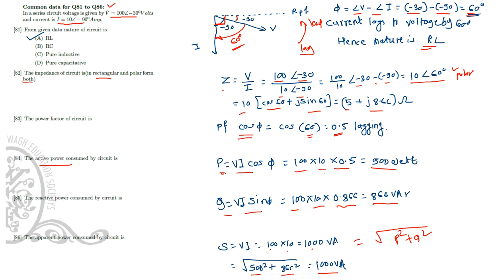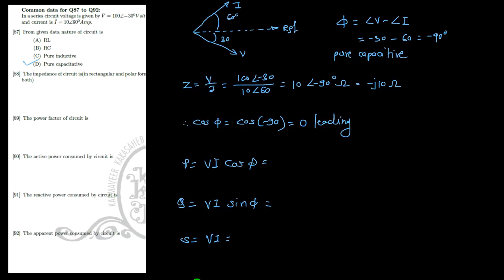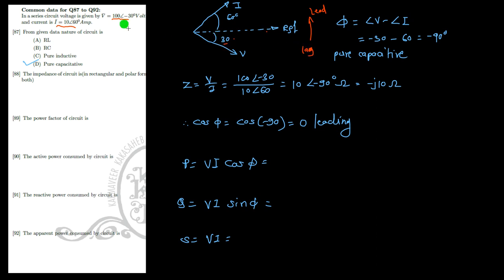In the next problem the voltage is 100∠−30° and the current is 10∠60°. With respect to the reference the voltage is lagging by 30° and the current is leading at +60°. The angle difference is −30° − 60° = −90°, which indicates that the current is leading the voltage by 90°. This is true in the case of pure capacitance.